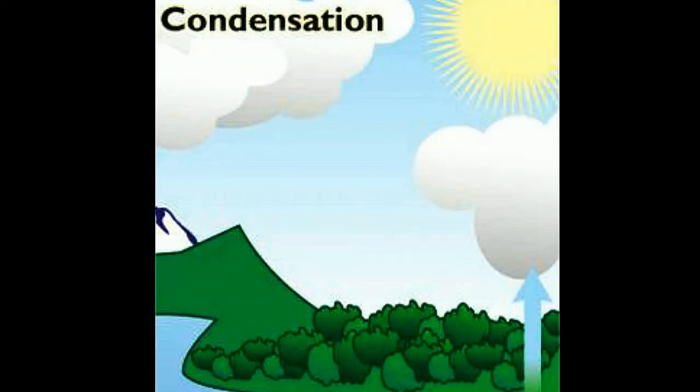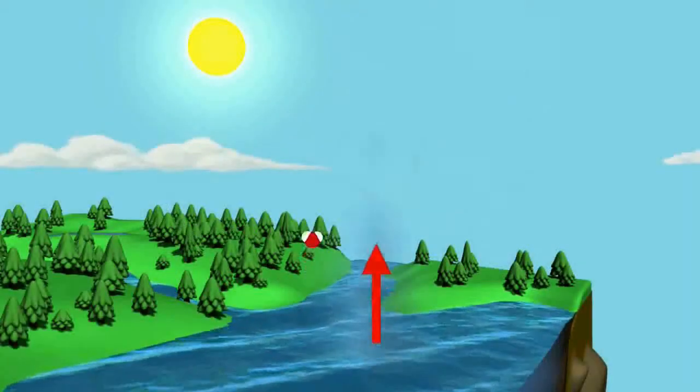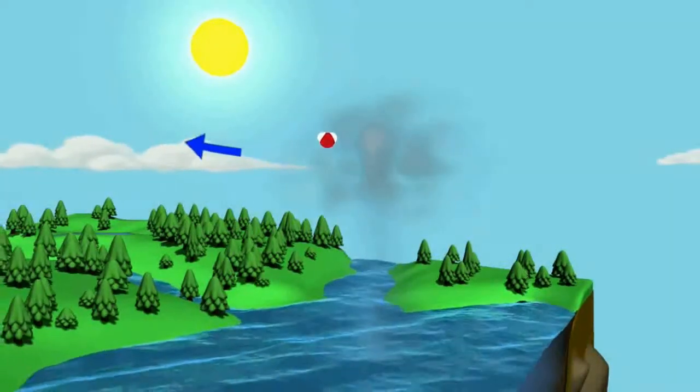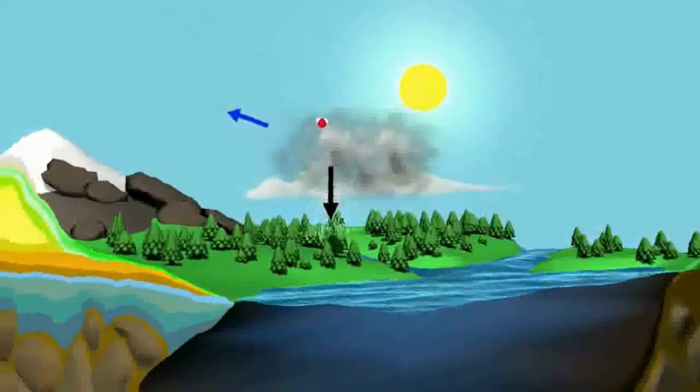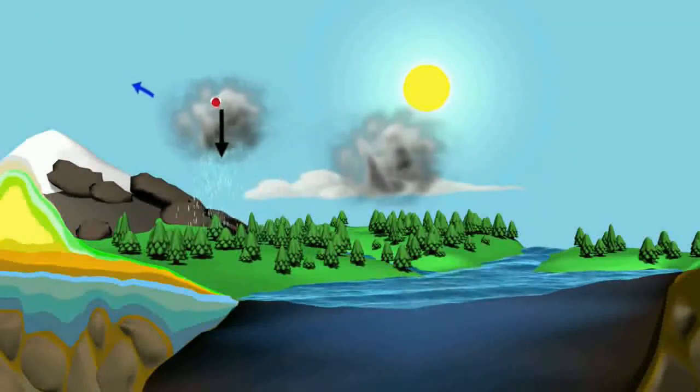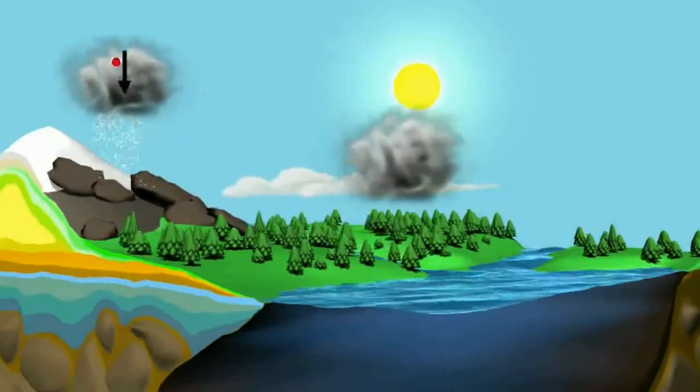Condensation is when water vapor in the air gets cold and changes back into liquid, forming clouds. Precipitation occurs when so much water has condensed that the air cannot hold it anymore. The clouds get heavy and water falls back to the Earth in form of rain, hail, or snow.